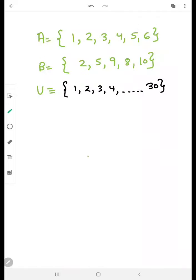Next is you have two sets A and B and universal set is also given. Here the universal set is having elements from 1 to 30. So this is U with 30 elements. A is having the elements like 1, 2, 3, 4, 5, 6 and B is also having some elements in common.